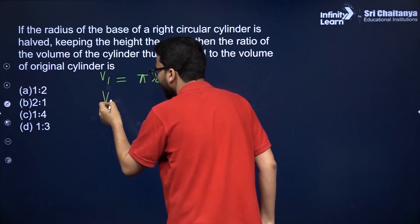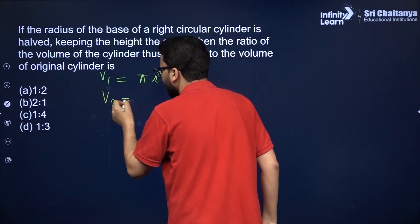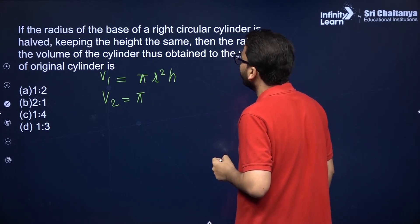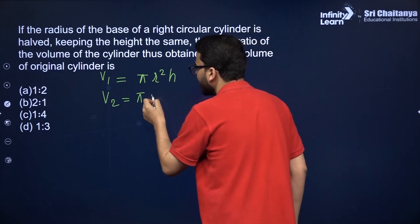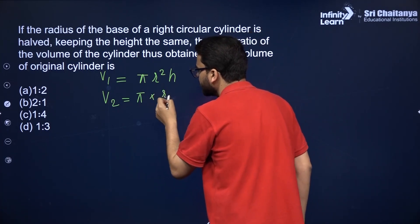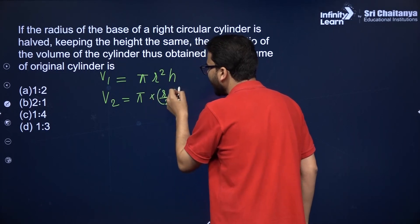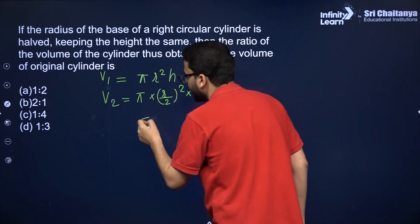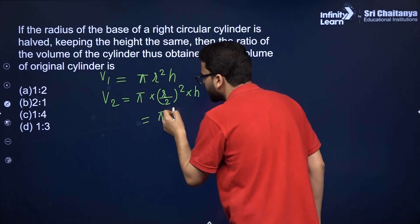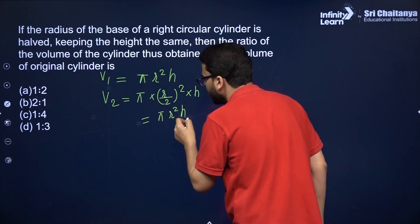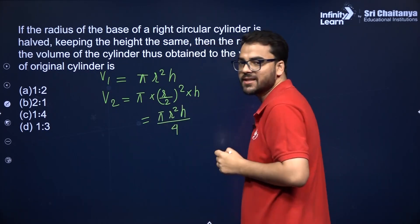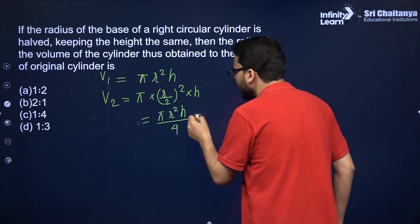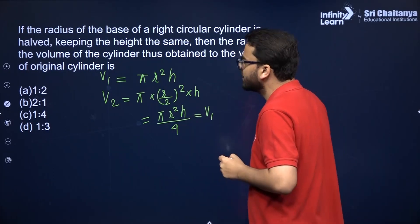What is the volume in the second case? It is π times — radius is half, so it will be r/2, keeping the height the same. So you can write it like this: π r² h upon 4. Now, π r² h is nothing but the volume in the first case.